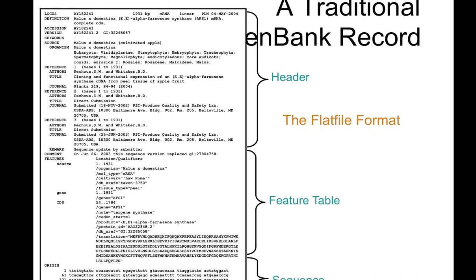So I mentioned to you that you have an Entrez record. This is a GenBank record. Usually there is the header, the feature table, and the sequence. In the header, what can you find? You find a locus name — in this case it's AY182241. You find what kind of sequence data it is: is it a messenger RNA? You find the size, it's linear. The definition: Malus domestica, which is apple — one of the synthase mRNA, complete coding sequence. Here is the accession number. The accession number is a number you get when you submit the sequence.